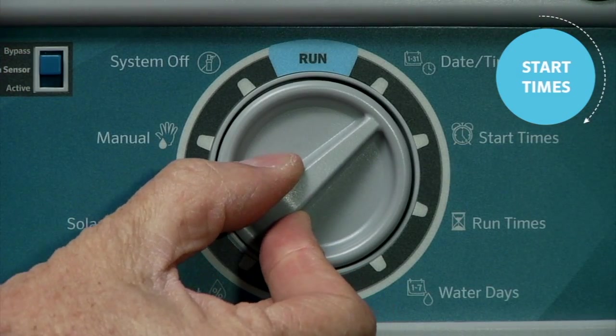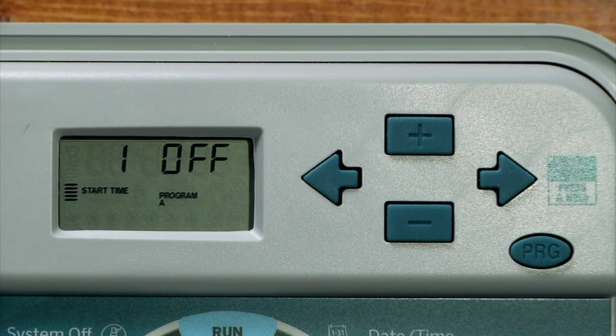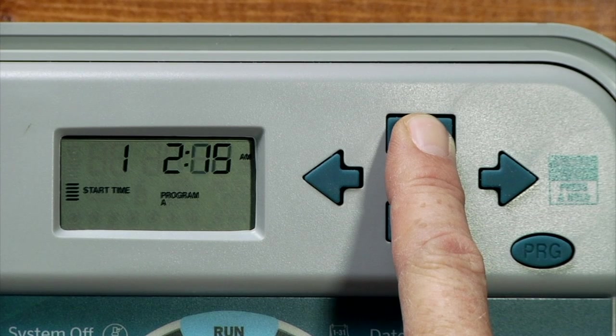Turn the dial to the start times position. The display will show the first start time in program A. Use the plus or minus button and set the first start time to 6 a.m.